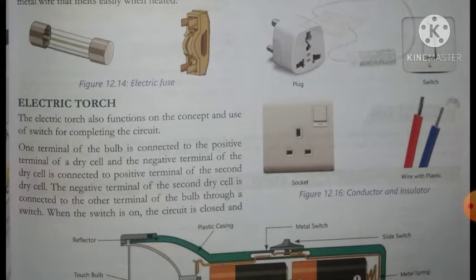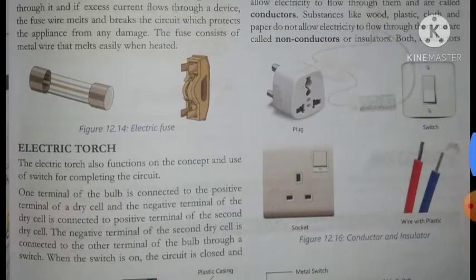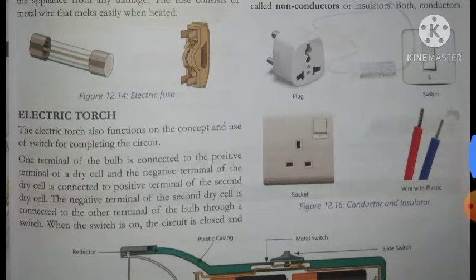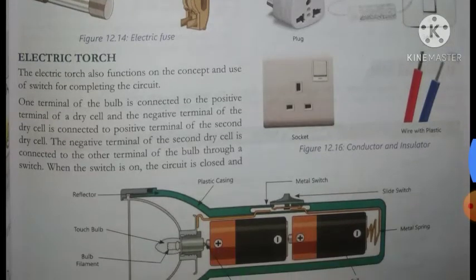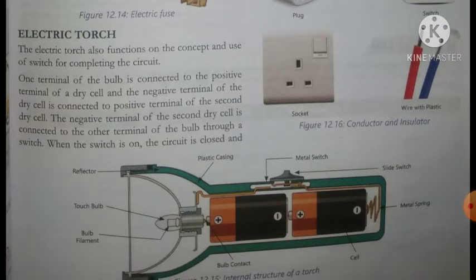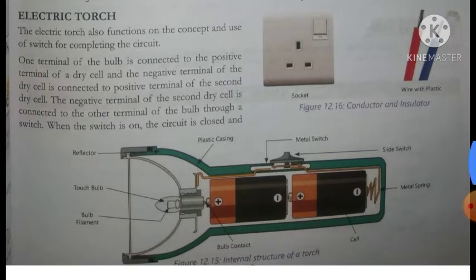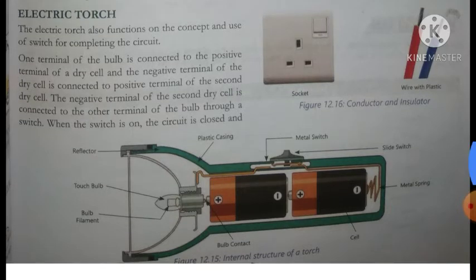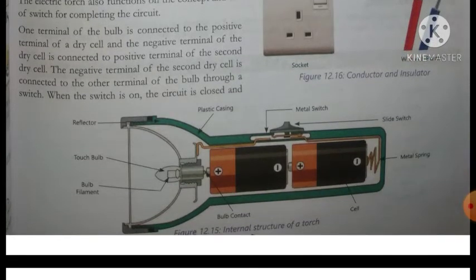In figure number 12.14 you can see two figures of different electric fuses. Next, let us discuss the electric torch. Electric torch bhi functions on the concept and use of switch for completing the circuit. Electric torch mein bhi ek switch hota hai on/off ka — wo bhi aapke circuit ko open karta hai aur close karta hai. Jab circuit open hota hai to switch off hota hai, aur jab switch on hota hai to circuit close hota hai aur current close circuit mein flow hota hai.